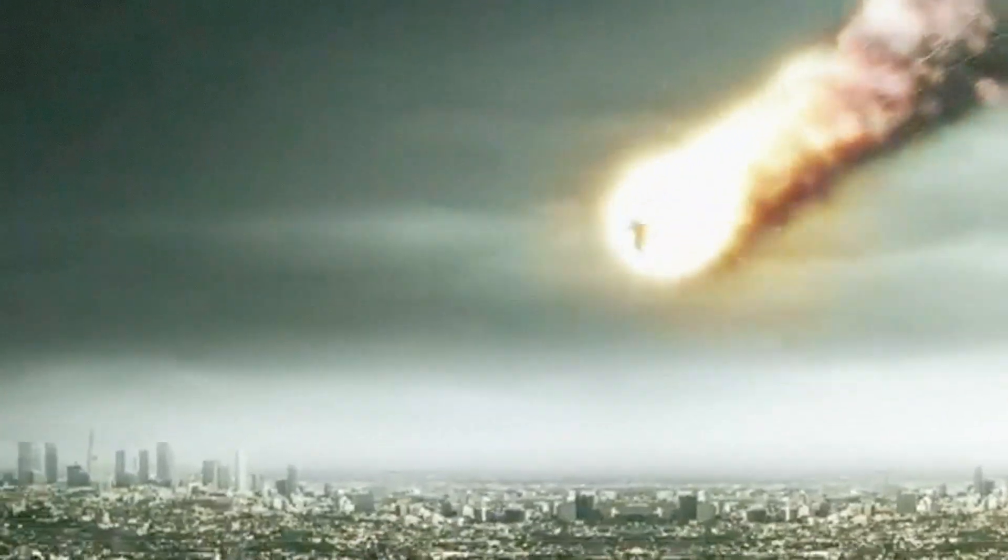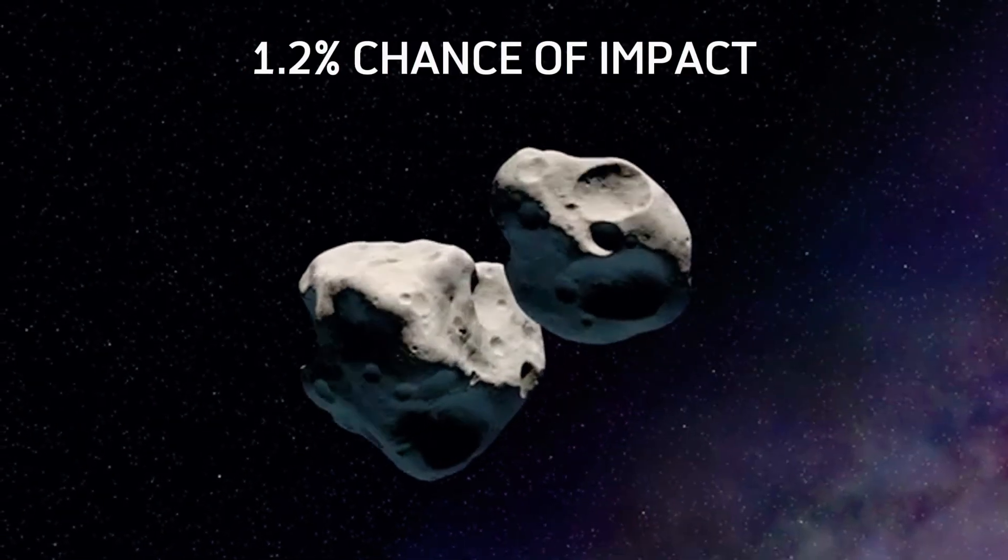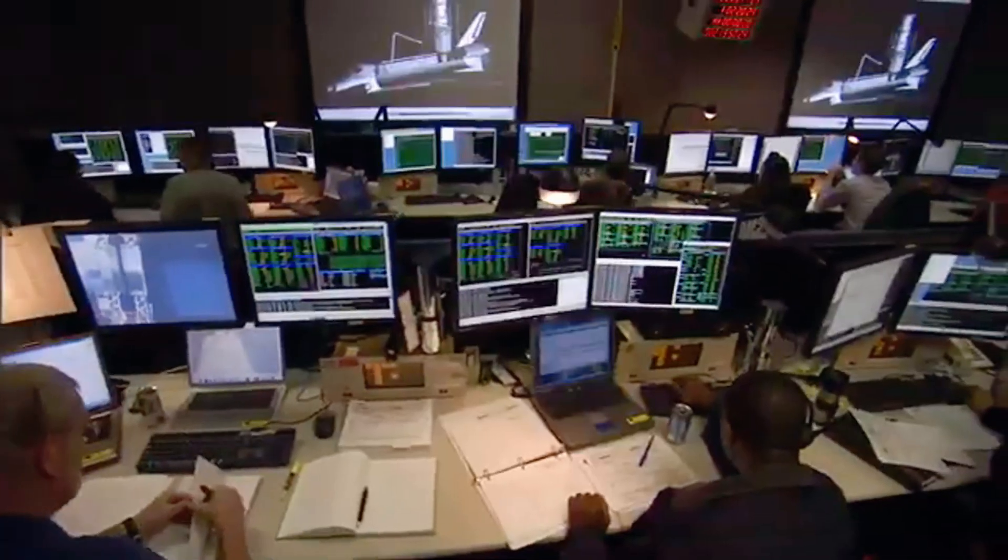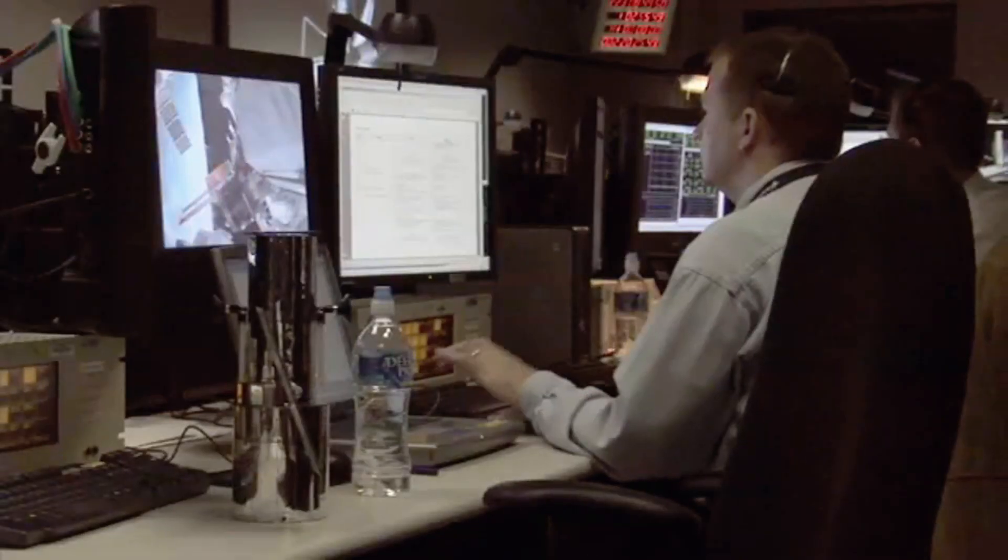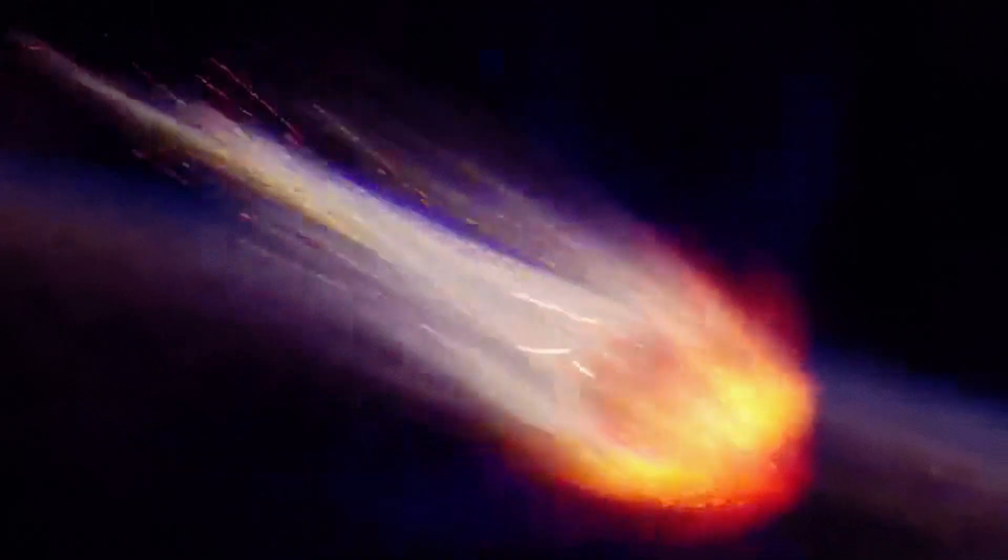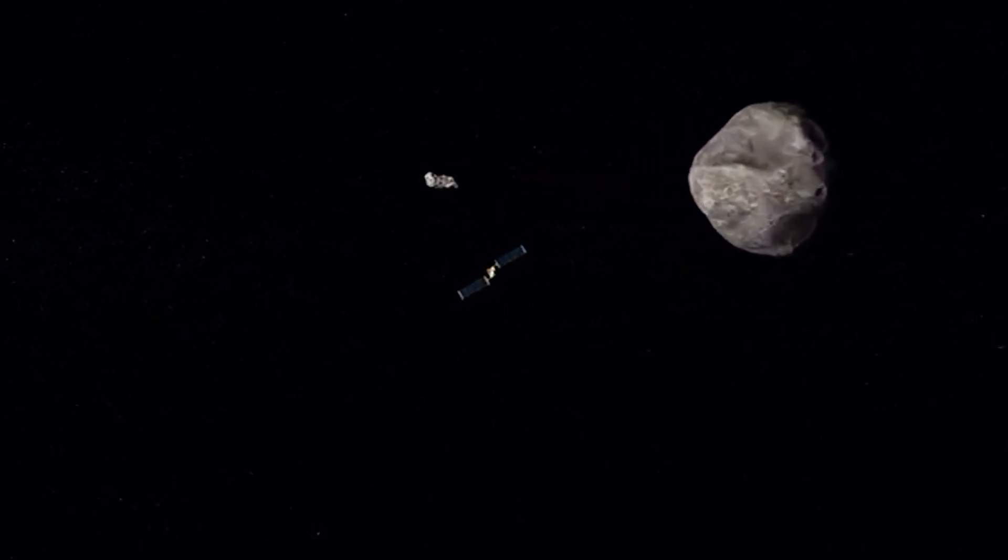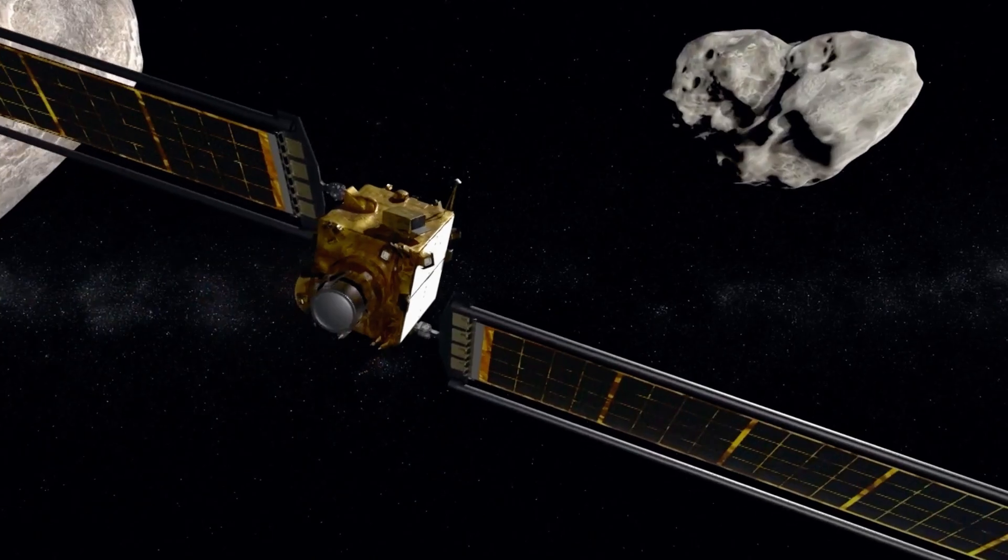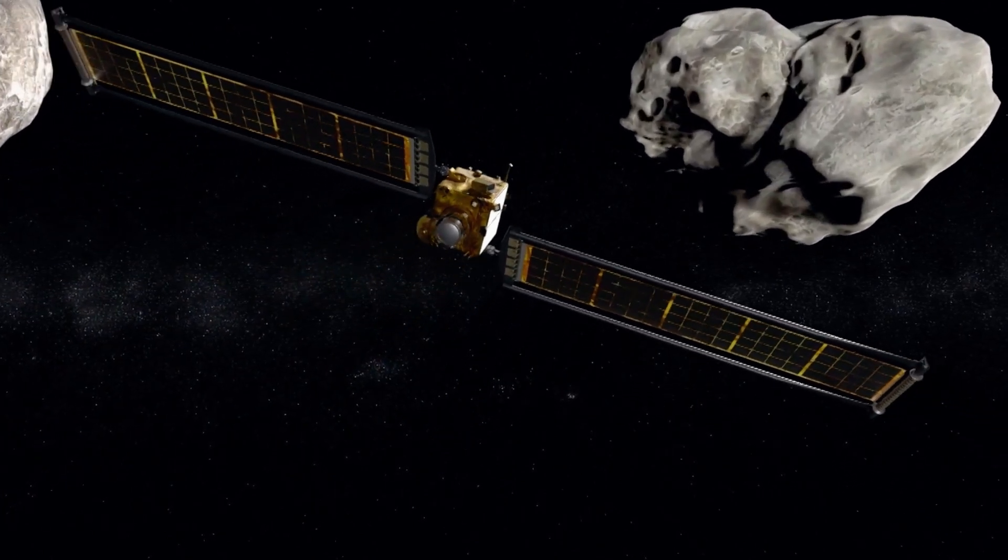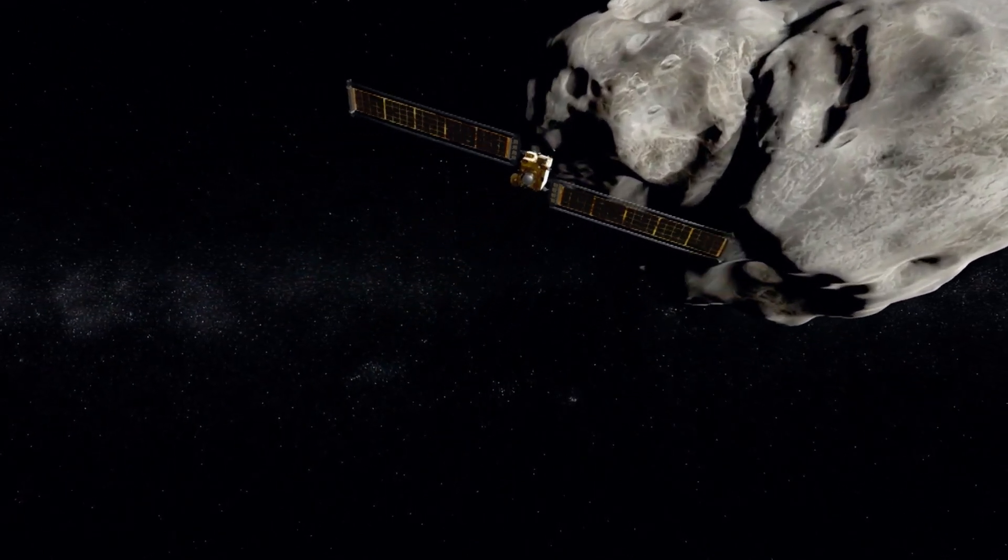Earning it a Level 3 rating on the Torino Impact Hazard Scale, it currently holds a 1.2% chance of impact, which might seem small, but in planetary defense terms, it's enough to keep space agencies on high alert. Scientists are closely monitoring its trajectory, and if that risk doesn't drop below 1%, there's a real chance we could see a planetary defense mission. A spacecraft sent to nudge the asteroid off course and prevent a potential disaster.